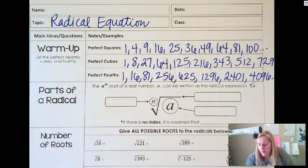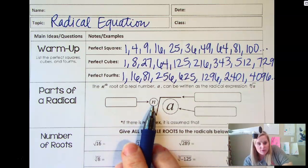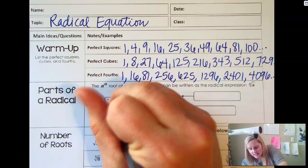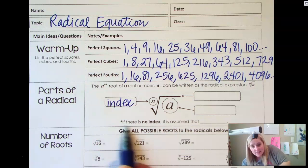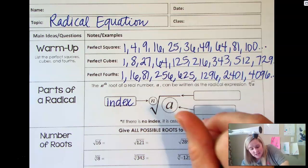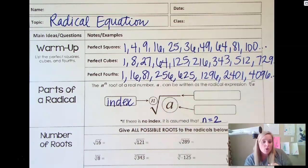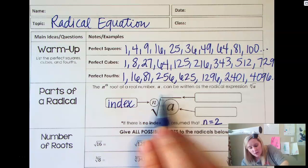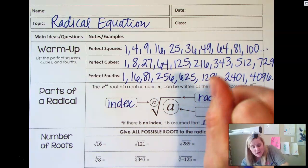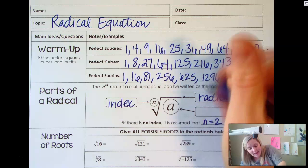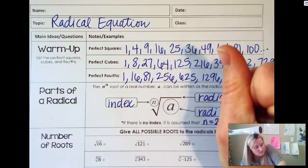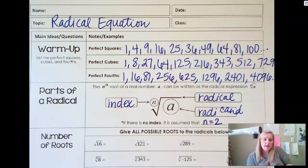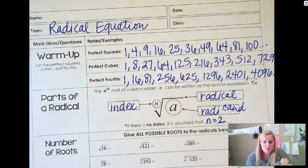So now let's talk about a radical. The number in the little notch is the index. If there's no index, then we know that N is going to be 2, or a square root — we don't put the 2 there for square root, it's understood. The actual little house itself is called the radical.